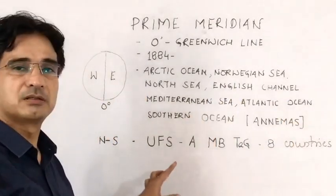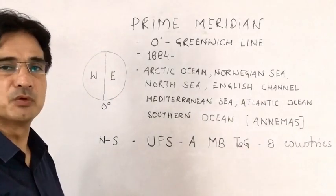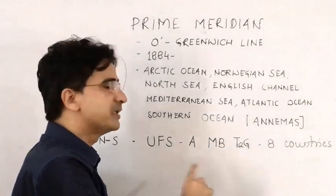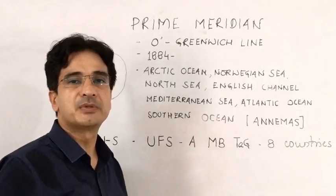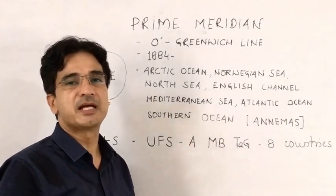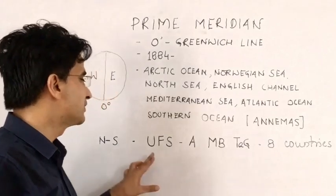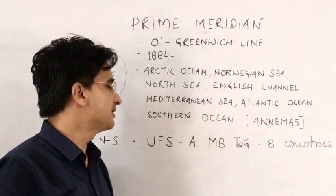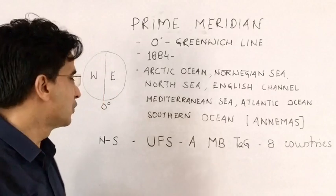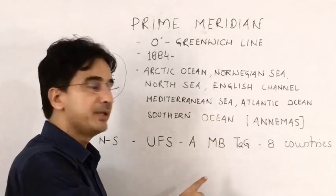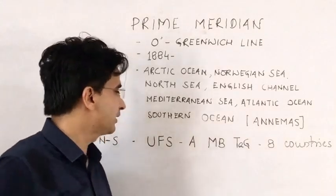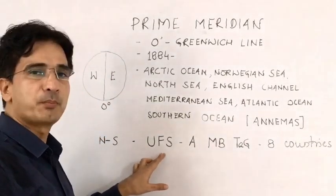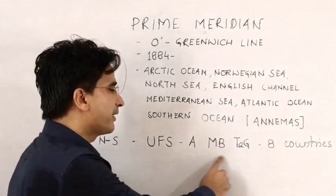Now we come to the countries, the main theme of this video. These countries are arranged from north to south in a complete sequence. The trick is 'Oops AMB tag' — it is composed of one M and B, so it got the tag of 'Oops AMB tag.' Three of these are European countries and five are African countries.